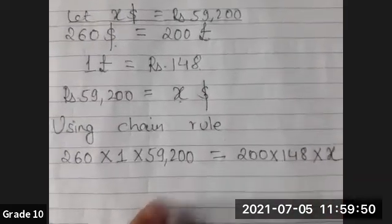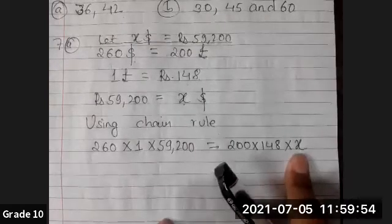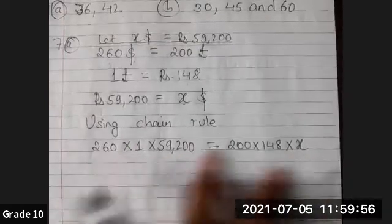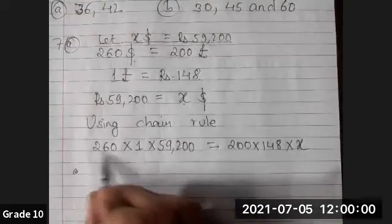Now the rest is solving the equation. X has to be kept alone and all the numbers should come on one side. I'll multiply all this.